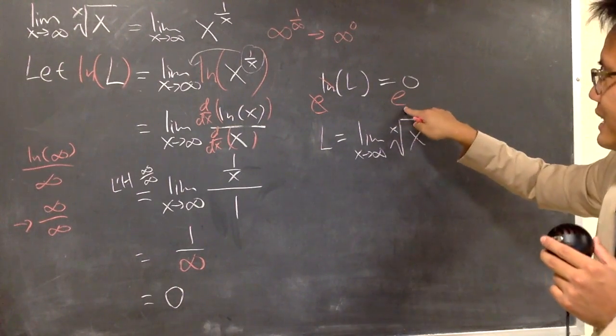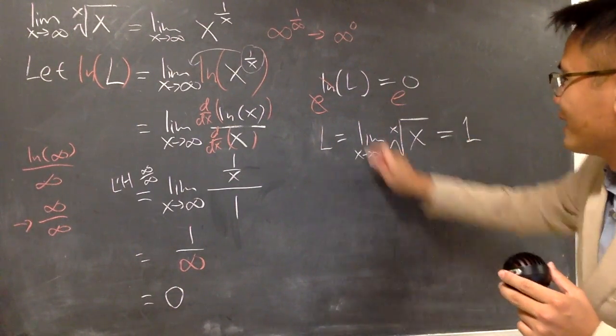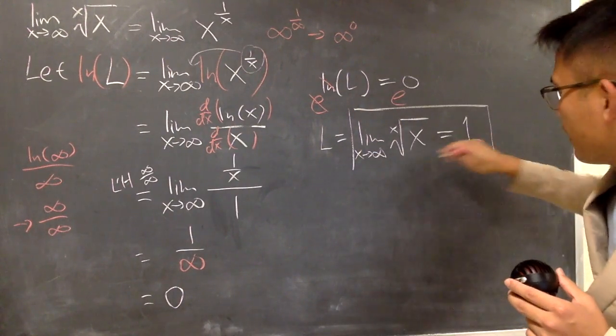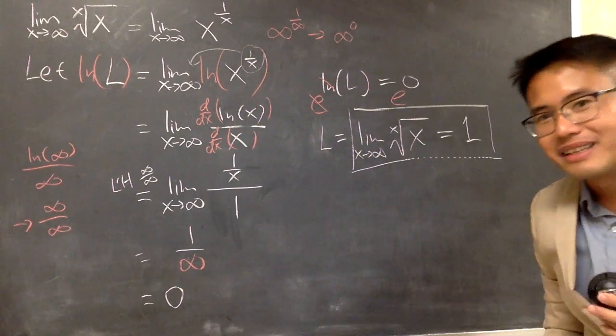This, right here, is e to the 0's power. Namely, 1. And, here we have it. Yeah, this is the answer.